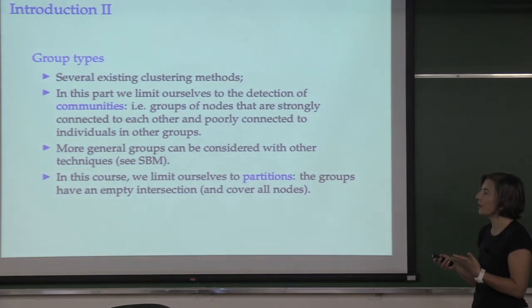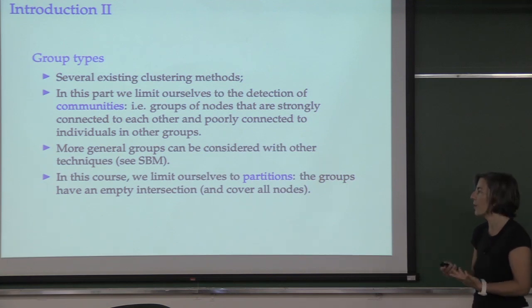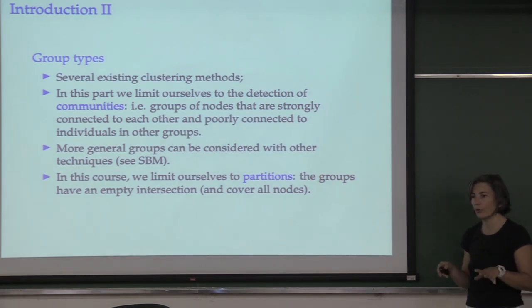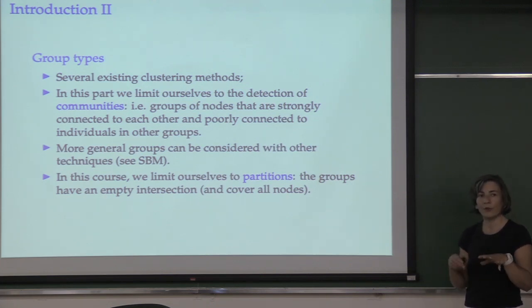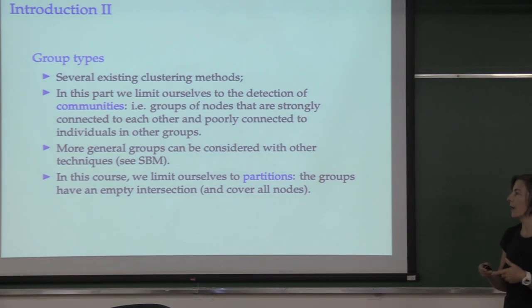More general groups can be considered with other techniques. With the stochastic block model, you don't assume that the clusters are communities — you can have something more general. Here we focus only on communities and we limit ourselves to partitions, which means the groups we construct on the nodes have an empty intersection and cover all the nodes. There are methods for overlapping communities, but that is not the case here.